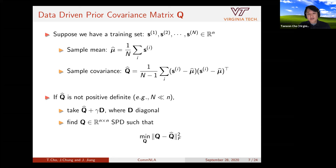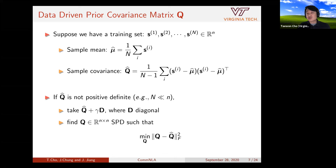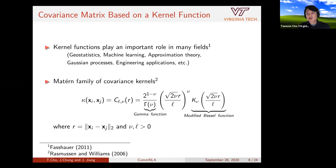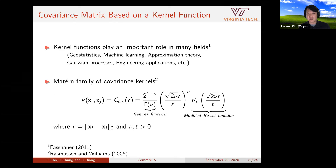Even if we solve for the nearest positive definite Q, it still has n-by-n parameters, which is not feasible to solve for all entries. So we try to reduce the number of parameters used to define Q. One idea is to use a kernel function, which is a concept from many fields. We use it here to define the covariance matrix.